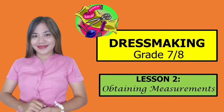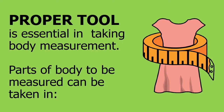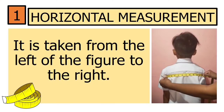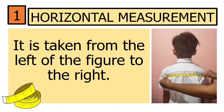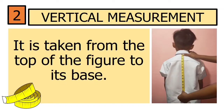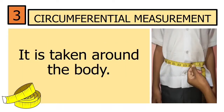Lesson 2: obtaining measurements for dressmaking for grade 7 or grade 8. Proper tools are essential in taking body measurements. Parts of the body to be measured can be taken in horizontal measurement, vertical measurement, and circumferential measurement. Horizontal measurement is taken from the left of the figure to the right. Vertical measurement is taken from the top of the figure to its base. Circumferential measurement is taken around the body.